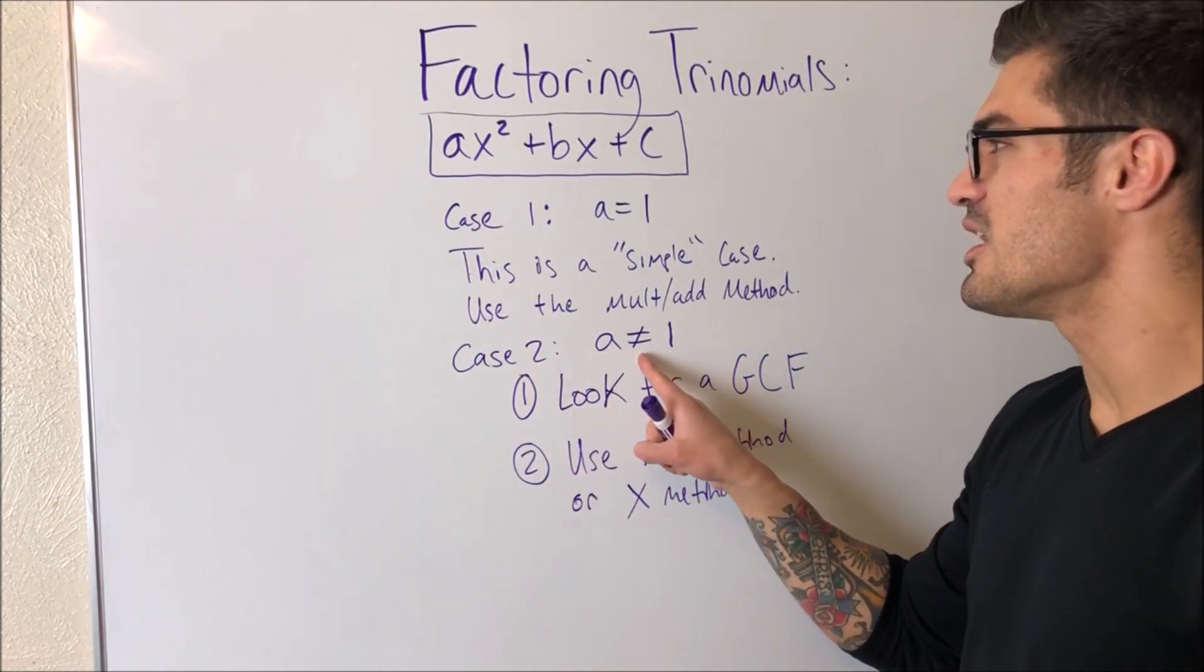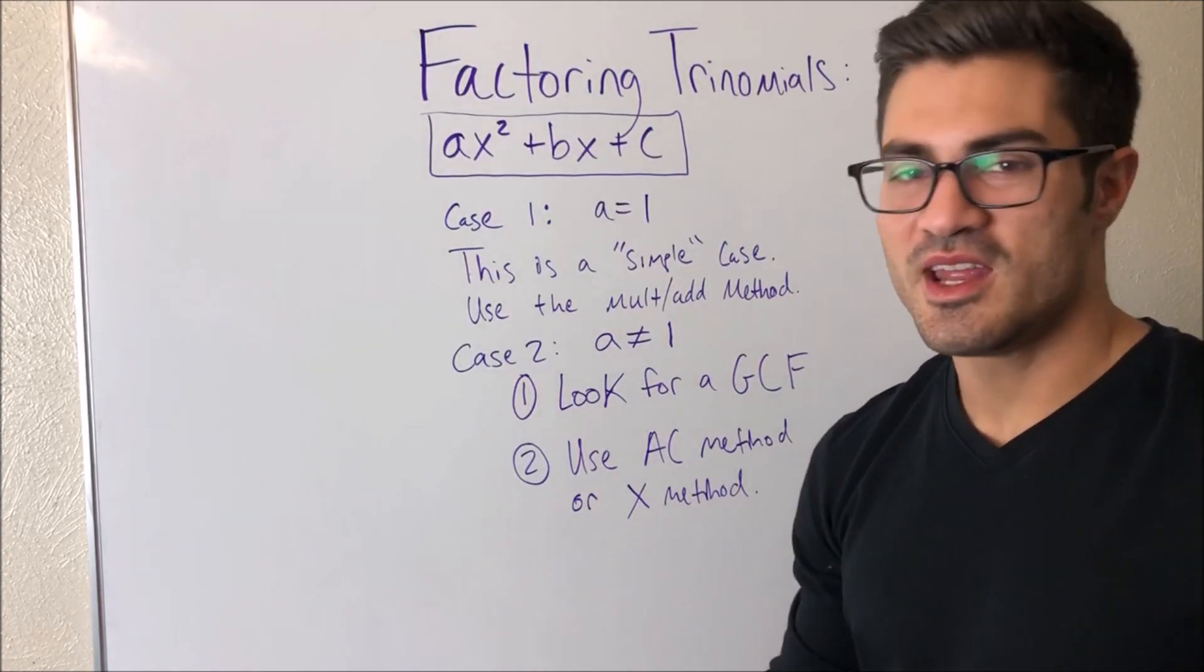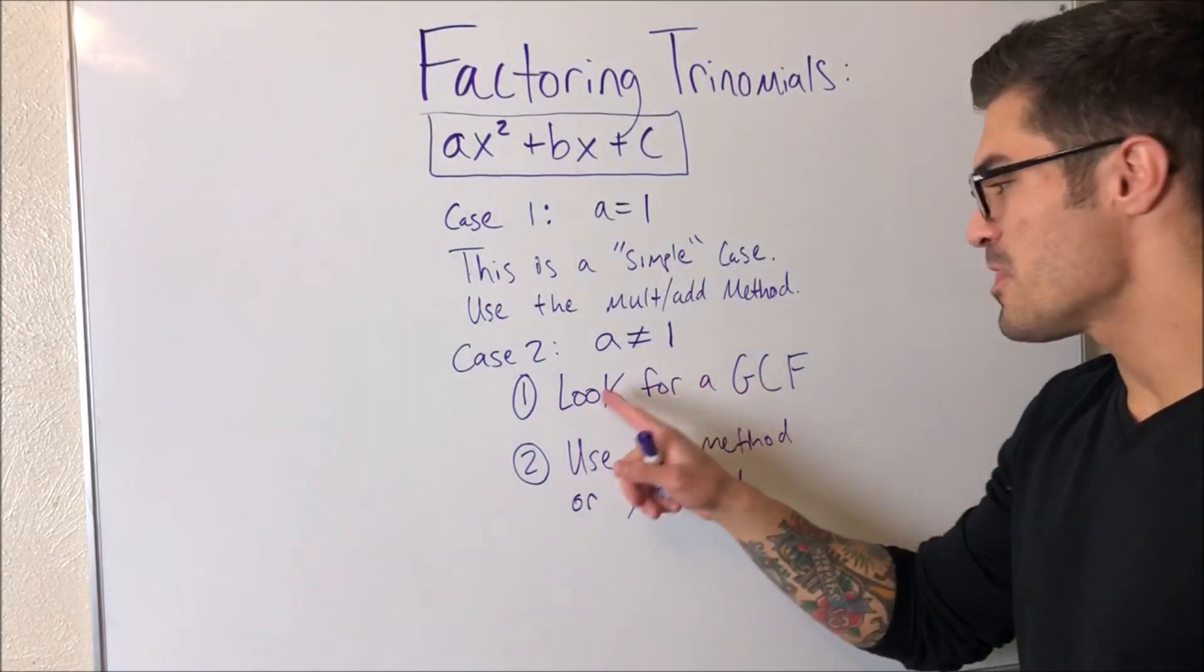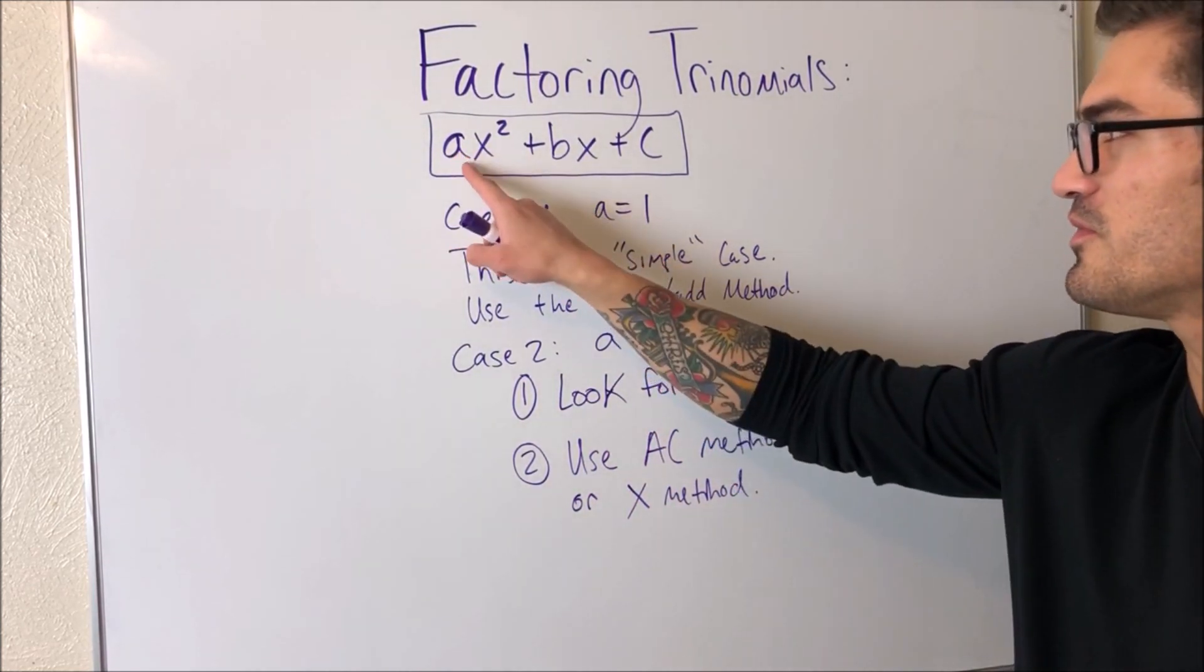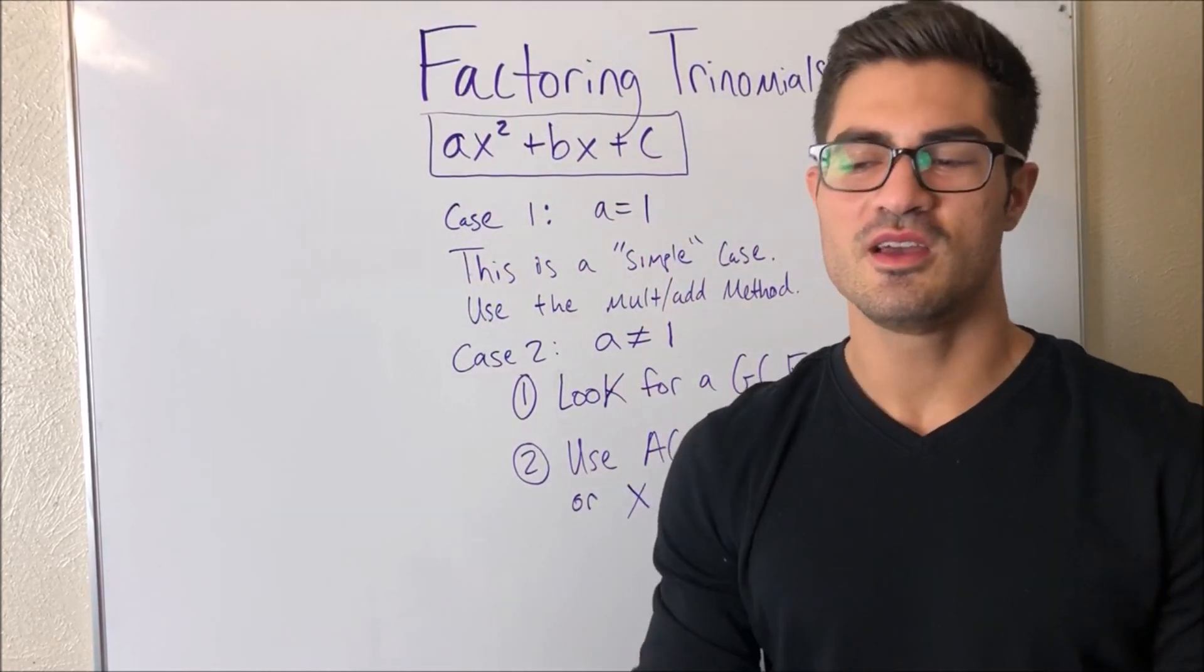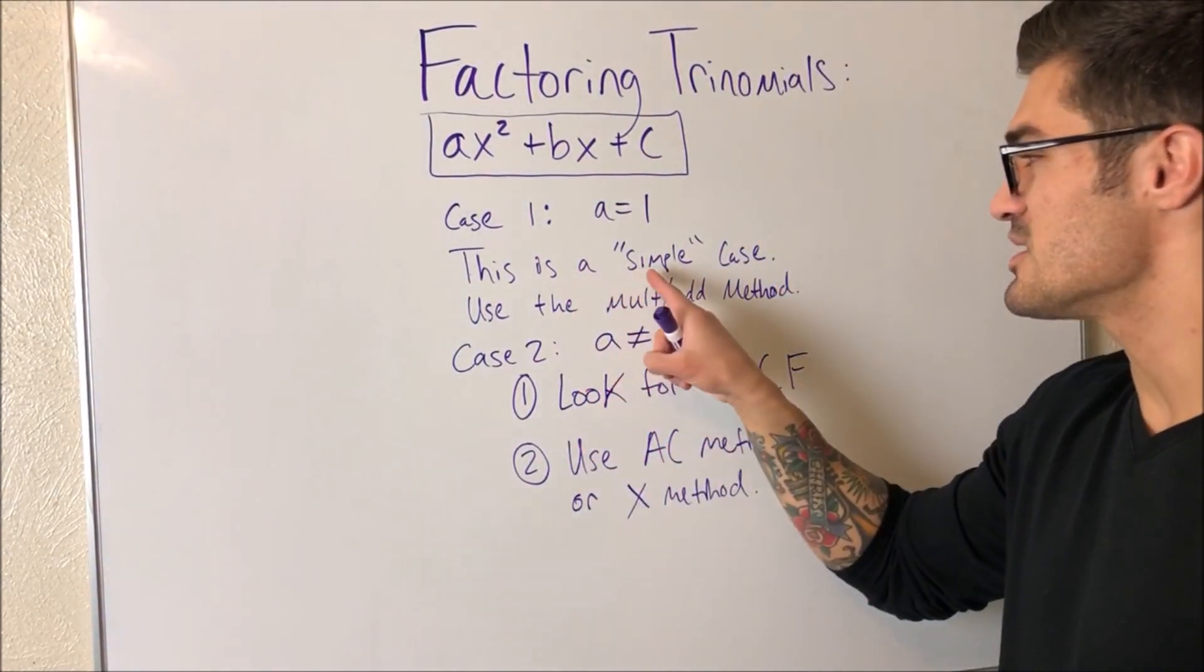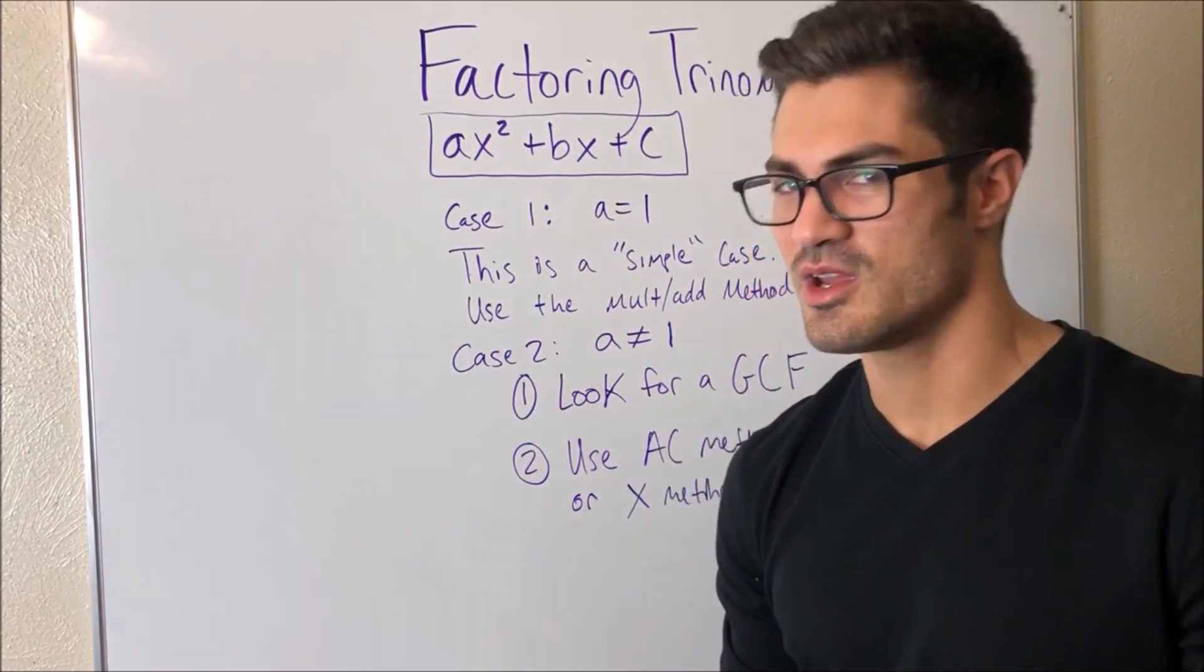Case two: a is not equal to one, so a is two, five, ten, anything other than one. The first thing you always do is look for a greatest common factor. Because what happens a lot is you have a common factor between these three terms, you can factor that out, and then what's left oftentimes is a simple case. And we'll see an example.